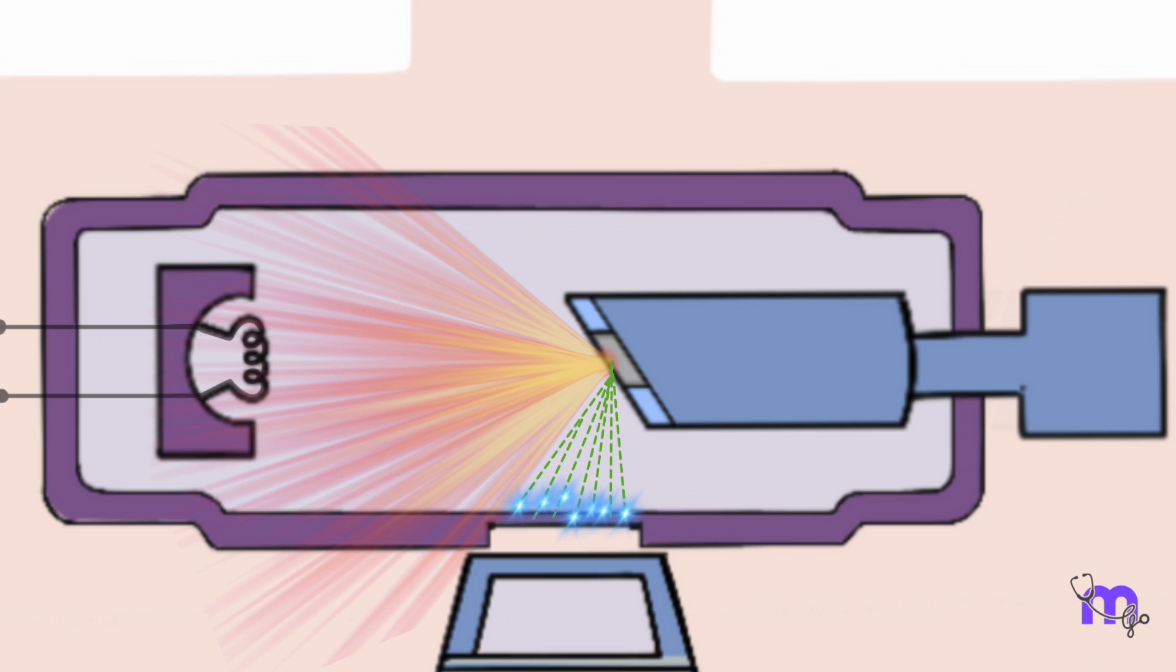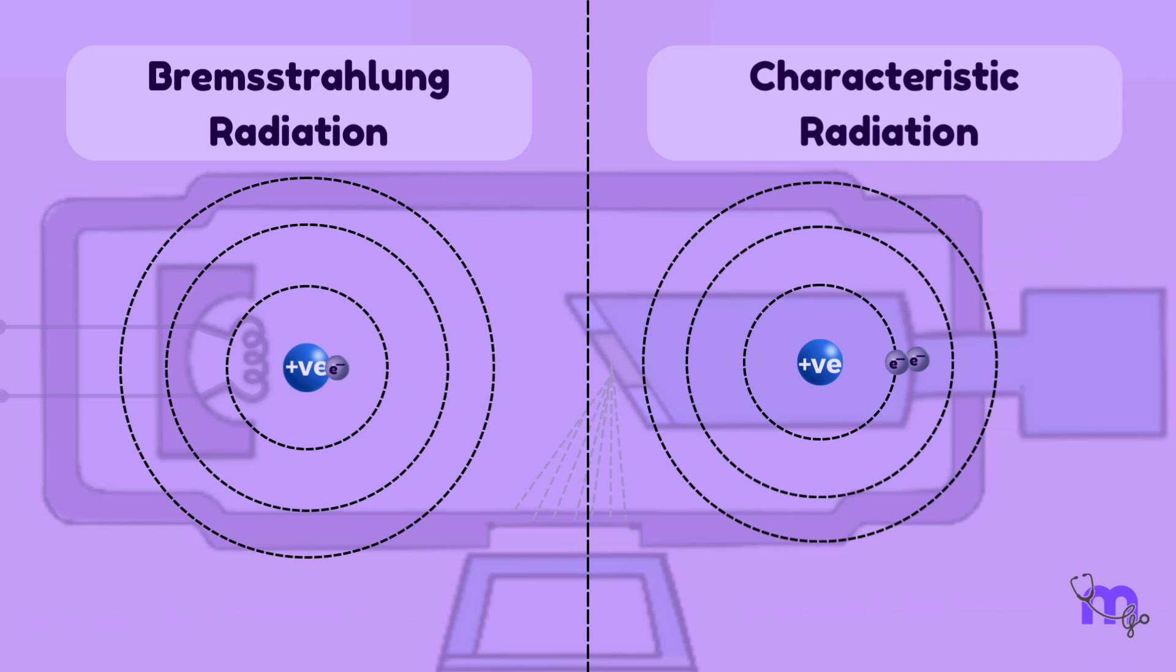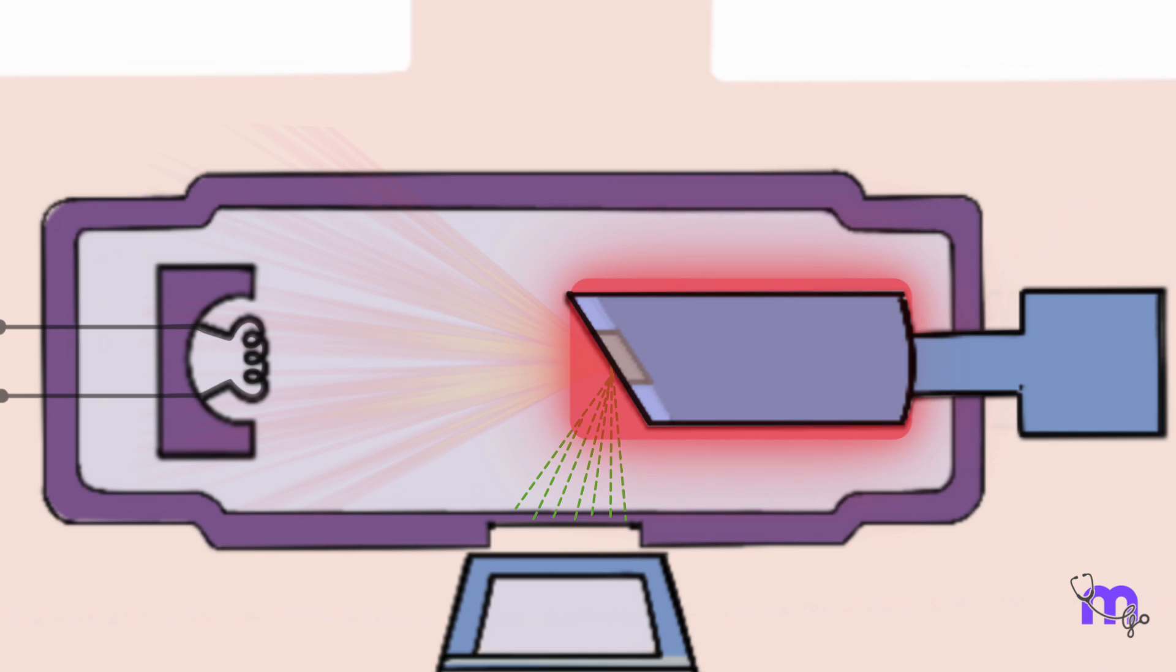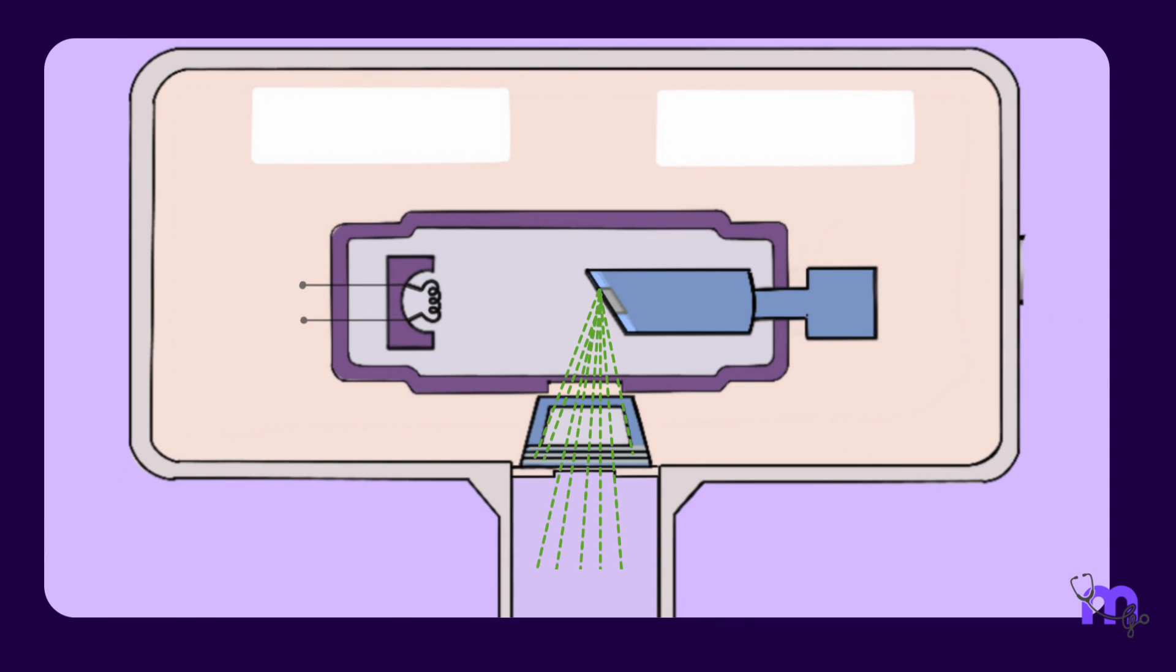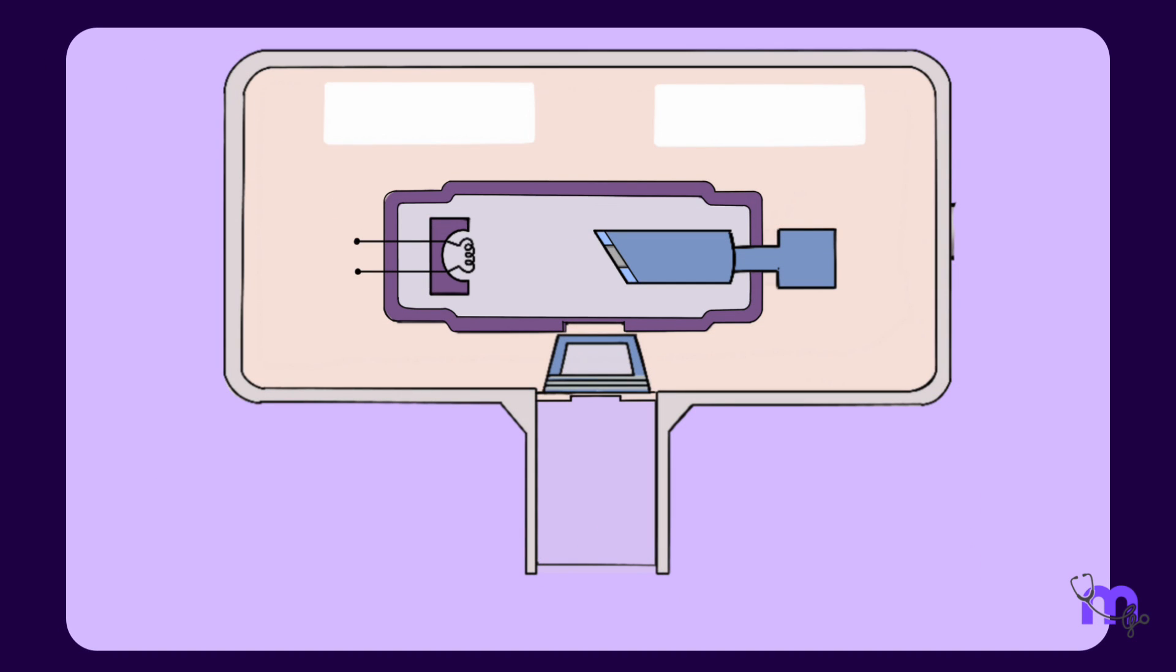When the electrons strike the target focal spot, less than one percent of their kinetic energy is converted to X-ray energy and the other 99 percent is released as heat. Based on how the incoming electrons interact with the tungsten target atoms, characteristic and bremsstrahlung radiation is produced. Out of the X-rays produced, 70 percent is emitted as bremsstrahlung radiation. Now the heat produced at the anode is absorbed by the copper stem and the insulating oil in the tube head. The X-rays produced exit from the X-ray tube via the unleaded glass window portion of the tube, passing through the tube head seal, aluminum filters, collimator, and out towards the patient through the PID.